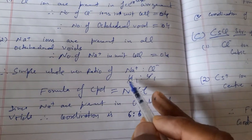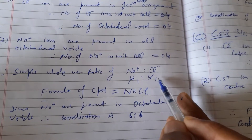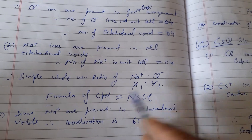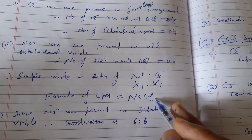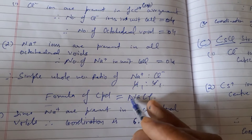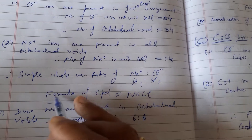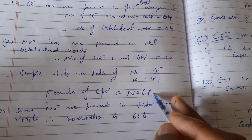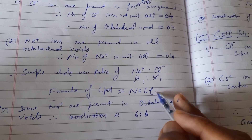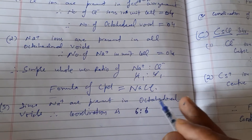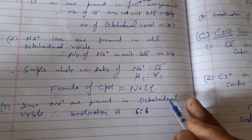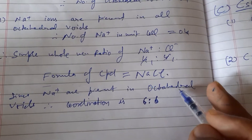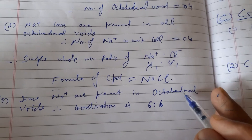Finding the simple whole number ratio of sodium to chloride ion: four to four cancels out to be 1:1. The formula of sodium chloride comes out to be NaCl. For the coordination number: since sodium ions are present in octahedral voids, and octahedral voids are surrounded by six negative ions, the coordination number is 6:6.